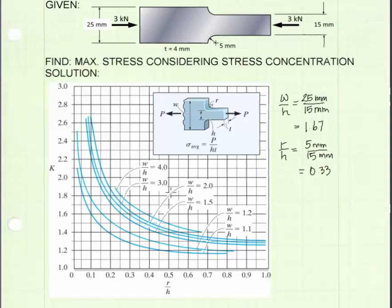To use the chart, we will begin with the W over H ratio. We have a value of 1.67. If we look at the values that are plotted on this chart, we see we have a value of 1.5 and a value of 2.0.